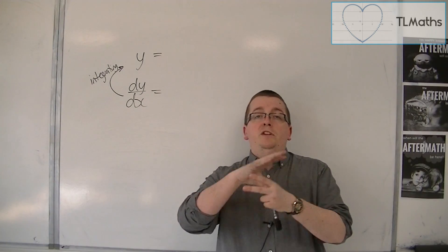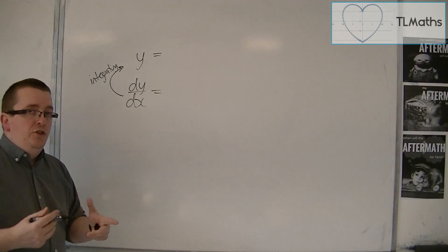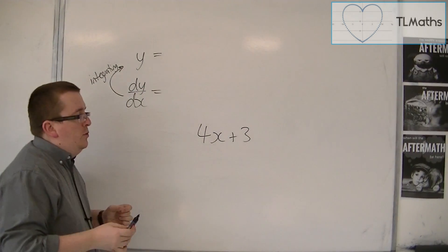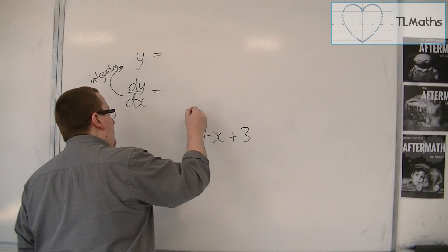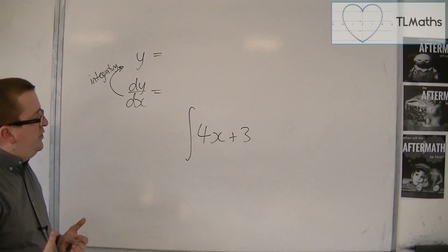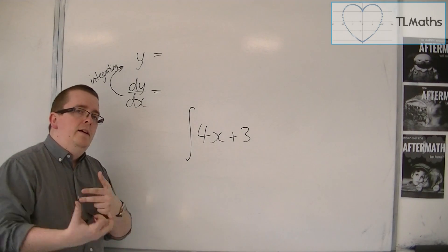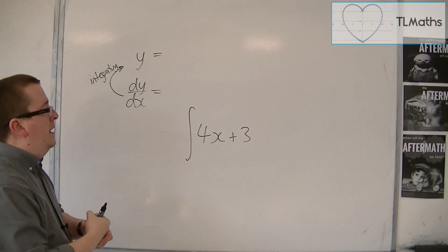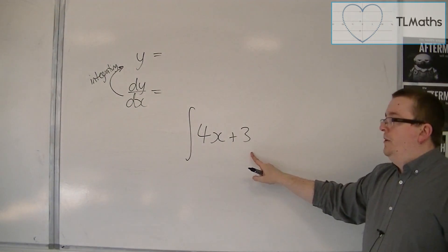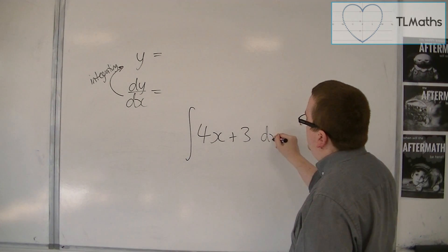In this video, I want to introduce you to some new notation that tells us to integrate. So if, for example, I want to integrate 4x plus 3, then the way to tell me to integrate it is to put an integration symbol to the left-hand side of it. This elongated S is the integration symbol — it's kind of like a summing symbol. What this is telling me is to integrate 4x plus 3, and I also need to be told what the variable is — what am I integrating with respect to? I integrate it with respect to x, and I write it as dx.